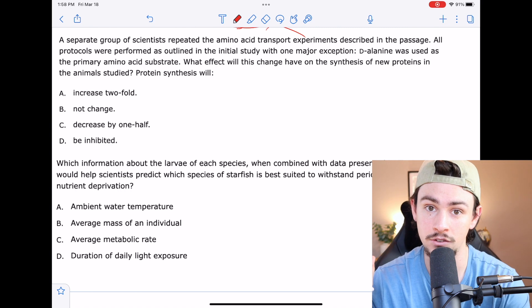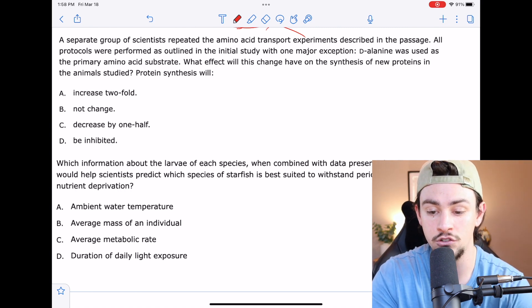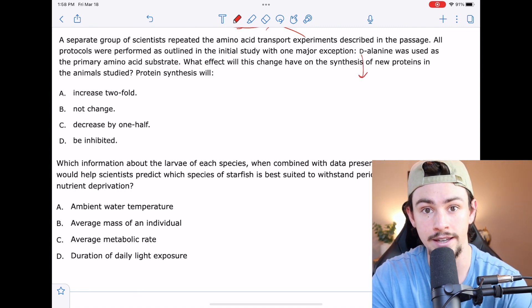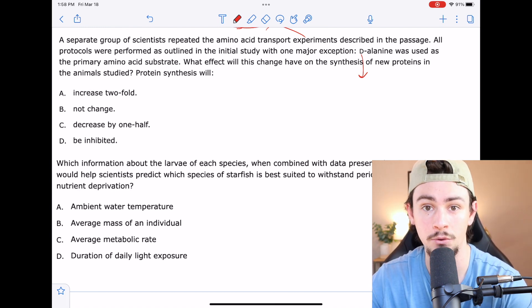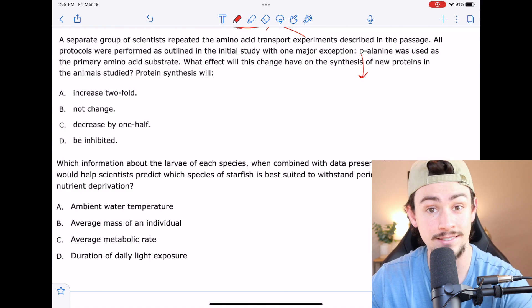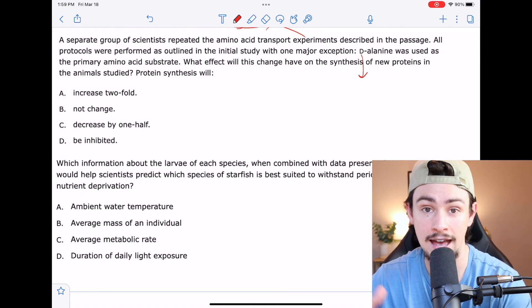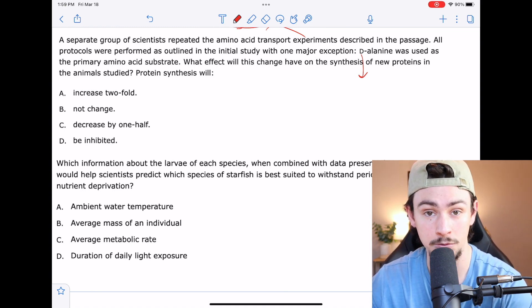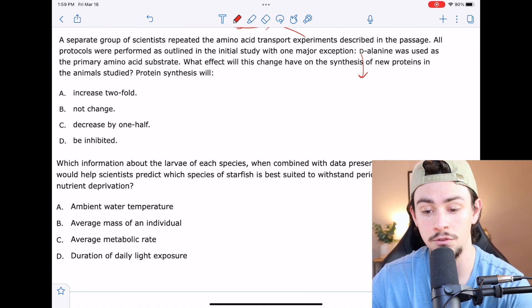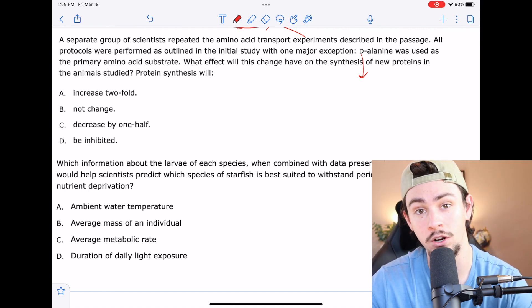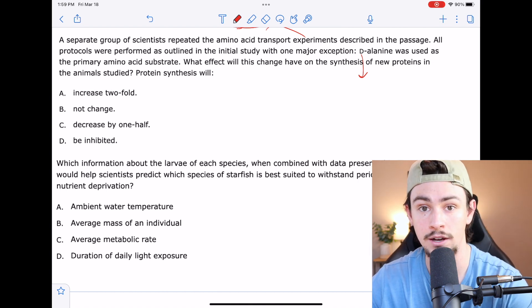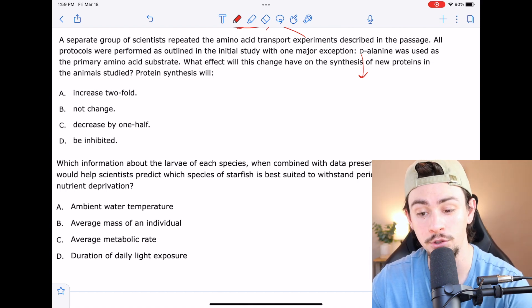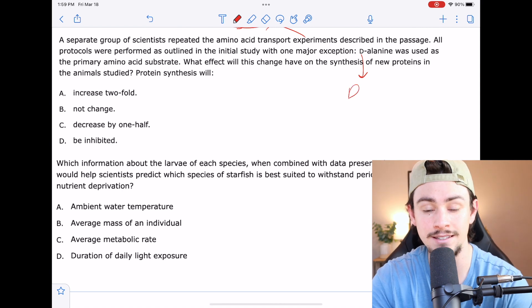So I can simplify this question as how does changing the stereochemistry impact protein synthesis? Now if you remember all of the enzymes and the proteins and the ribosomes that are involved in synthesizing proteins actually have a preference for a specific stereochemistry. And so if you throw in D-alanine when our body is used to making L-alanine and proteins out of the L-stereoisomer, our proteins will not be able to interpret this D-isomer. So D is a no-go.